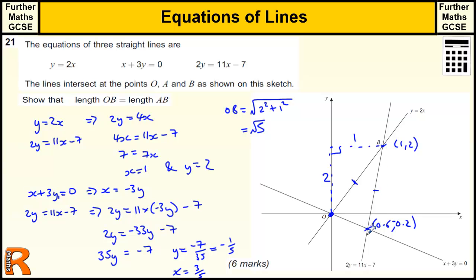And AB, so let's use a different colour there. So this right angle triangle here, where we're going from 0.6 to 1, so that's 0.4 across. Then we're going from minus 0.2 to 2, so that's 2.2 high. So AB is going to be the square root of 0.4 squared plus 2.2 squared.